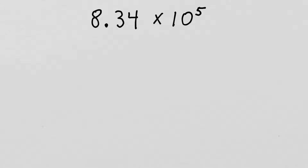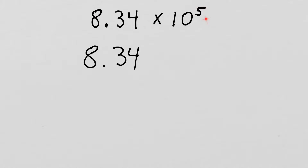This question is asking us to take 8.34 times 10 to the fifth and turn it into standard form or standard notation. Doing this is pretty easy. What we need to do is rewrite the number 8.34 and we're going to take our decimal place and jump it over to the right five times.